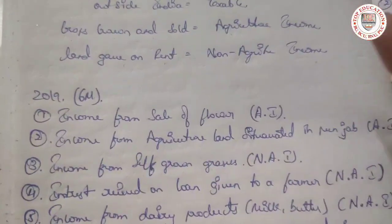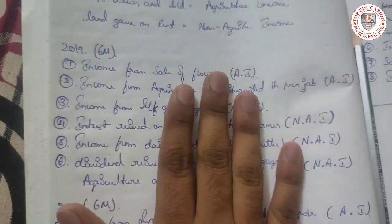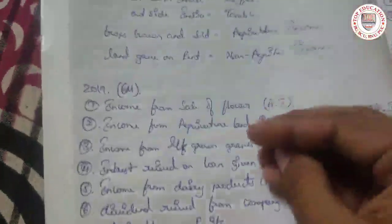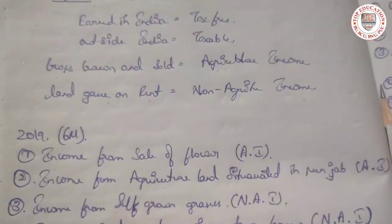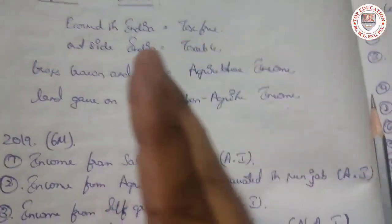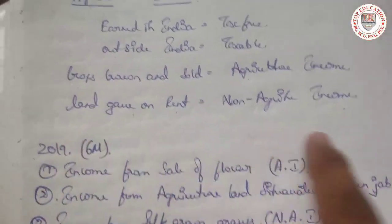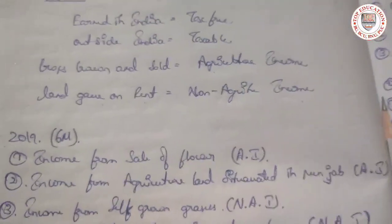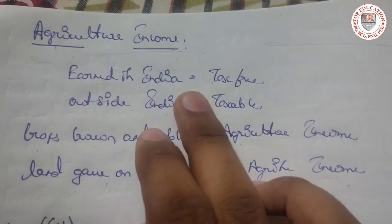Here we have taxable and non-taxable income, and we have to identify which is taxable and which is not taxable. The question will be for six marks and will ask you to identify whether this income is taxable or not taxable.